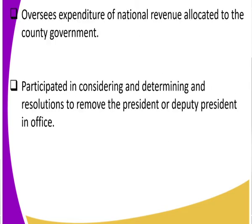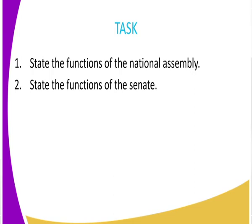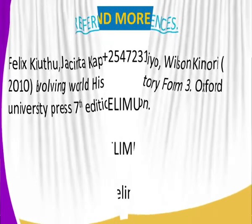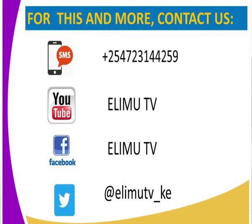The Senate also has other functions, for example overseeing expenditure of national revenue. They also participate in considering and determining the resolution to remove the president or deputy president — after the National Assembly has resolved to impeach the president or deputy president, it is the Senate that gets to consider and determine the resolution. For our task, state the functions of the National Assembly and the Senate. For reference, use The Evolving World: History and Government. This is Limu TV, your favorite learning station — thank you all.